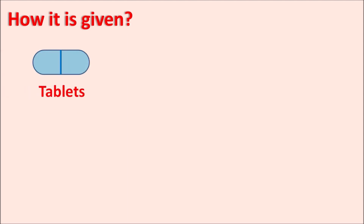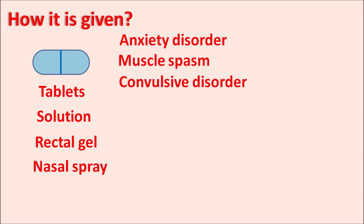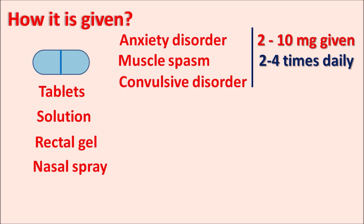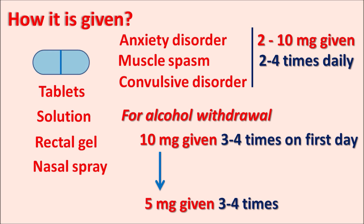Diazepam is available as tablets as well as solution for intravenous or intramuscular use. It is also available as rectal gel and nasal spray, which are particularly used to control uninterrupted convulsions. The dose should be individualized depending on the type of clinical indication. For anxiety disorders, acute muscle spasm, and convulsive disorders, the dose is 2 to 10 mg given 2 to 4 times daily. For alcohol withdrawal, 10 mg 3 to 4 times on the first day, followed by 5 mg 3 to 4 times daily.